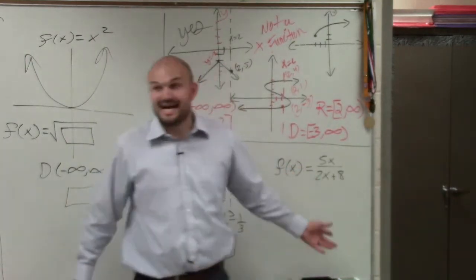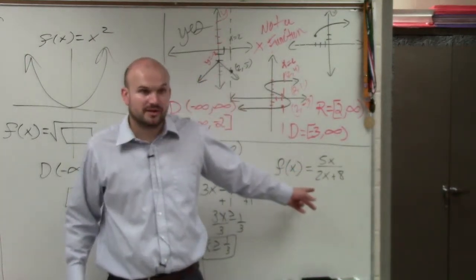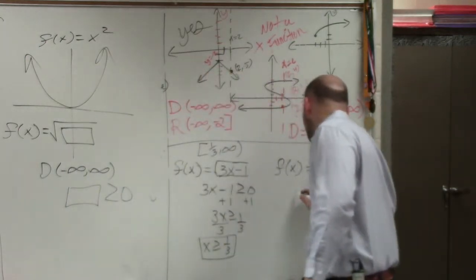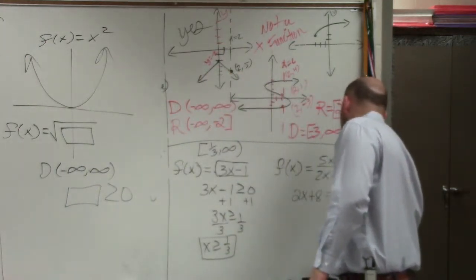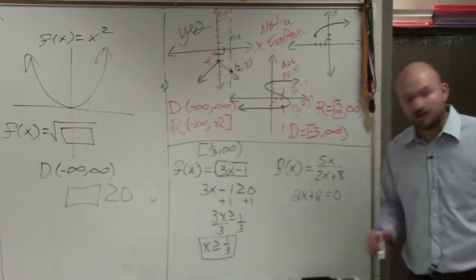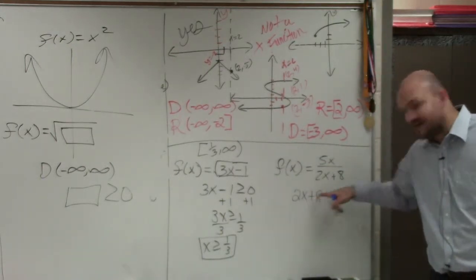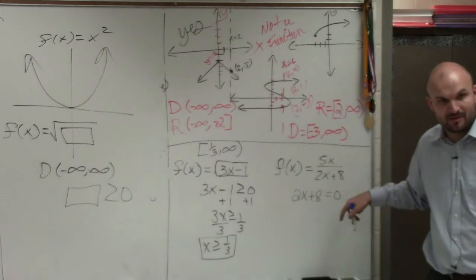So you can either try to guess in your head and figure out what it is, or you can simply just write an equation. 2x plus 8 equals 0. Whatever values of x make this equal to 0 is not going to be a part of my function. OK, Brandon?